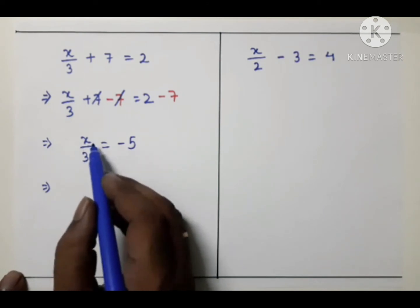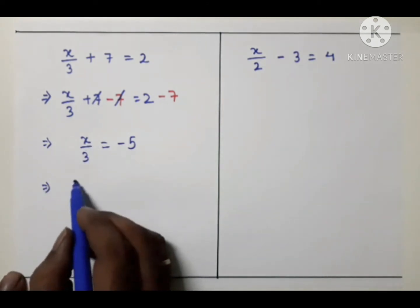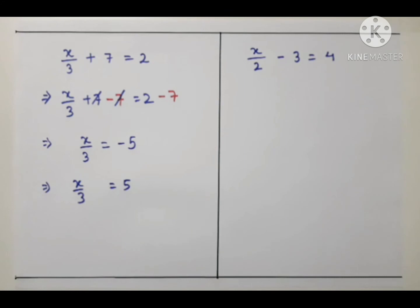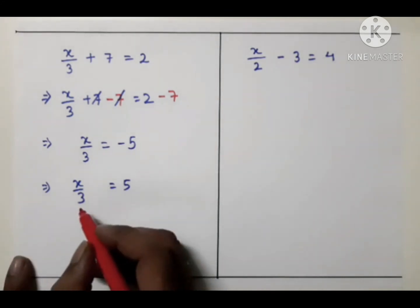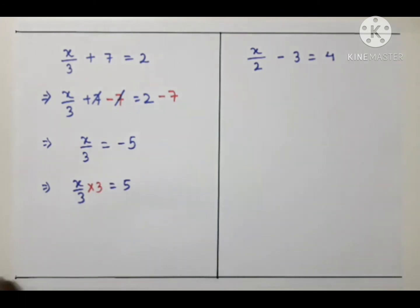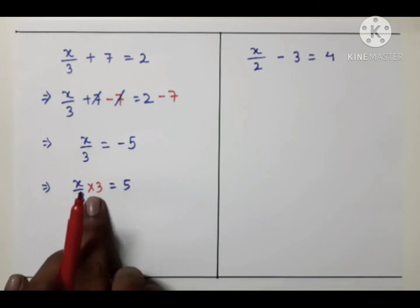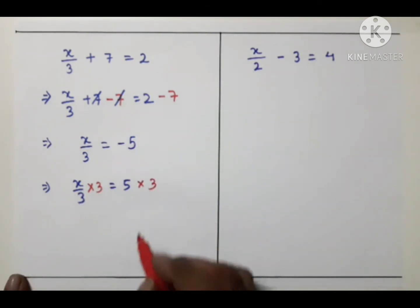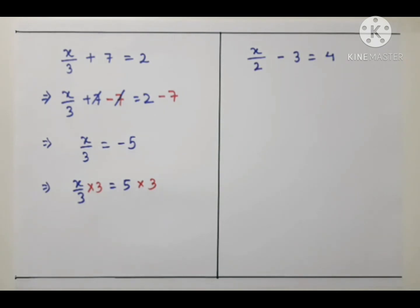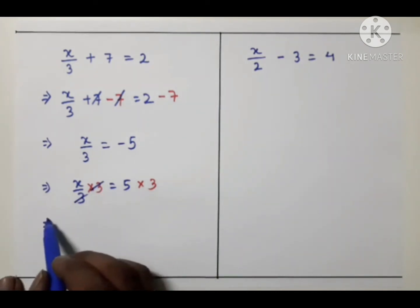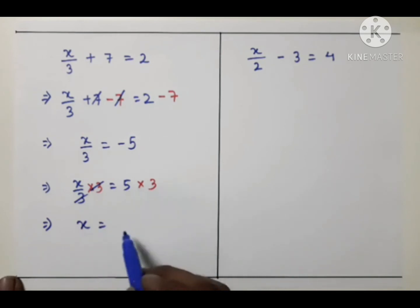We still have the 3. Since 3 is divided, the inverse is multiplication, so we multiply both sides by 3. The 3s cancel and we get x = −5 × 3 = −15.